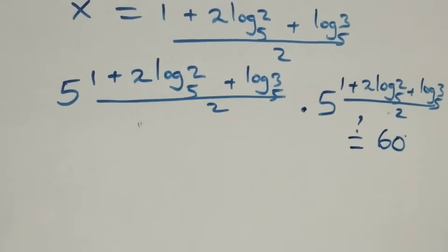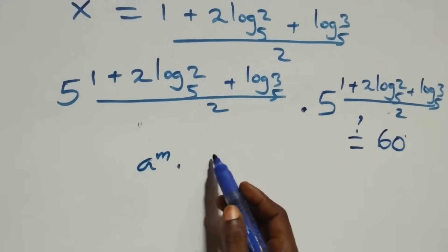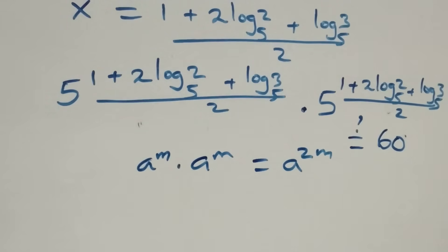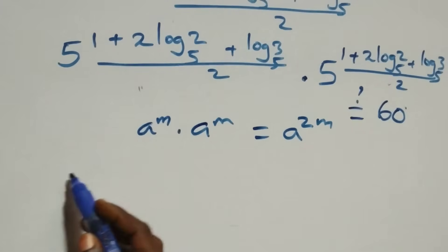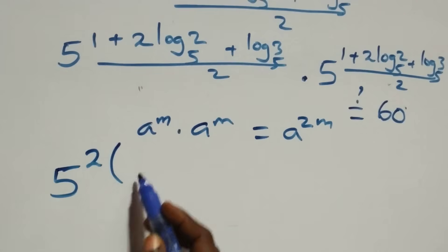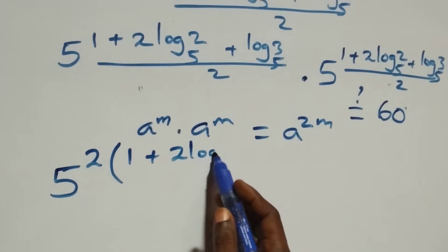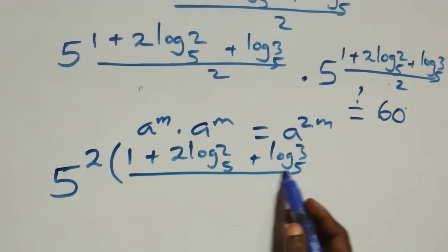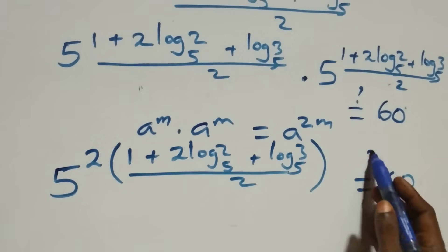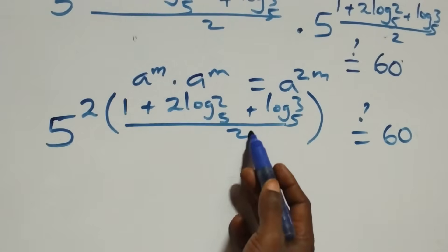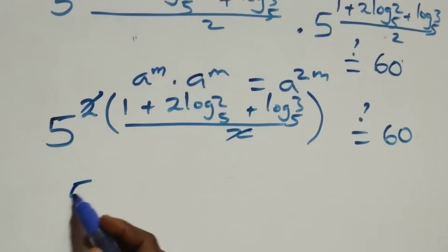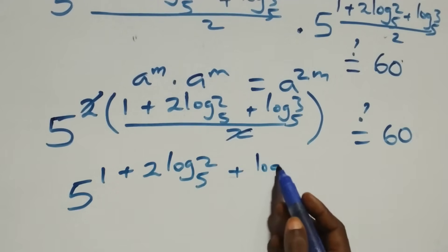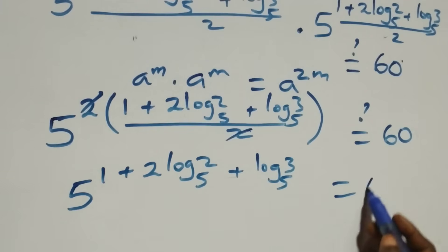Here we have the same thing multiplying: a raised to power m times a raised to power m is the same thing as a raised to power 2m. So this can be written as 5 raised to the power 2 times [(1 plus 2·log₅2 plus log₅3)/2], which equals 60. The 2 and the denominator 2 cancel, leaving 5 raised to the power (1 plus 2·log₅2 plus log₅3).